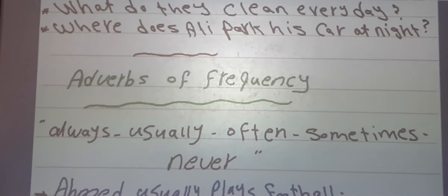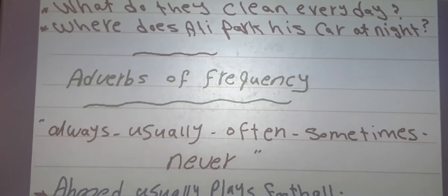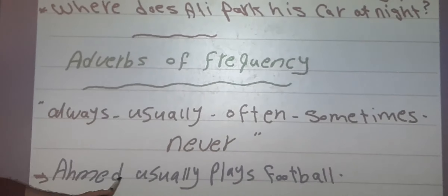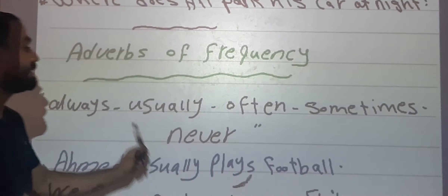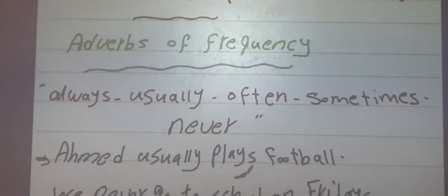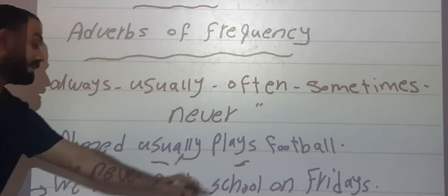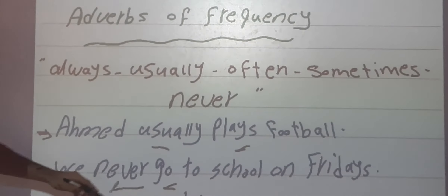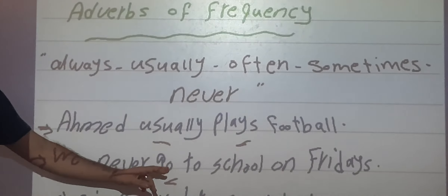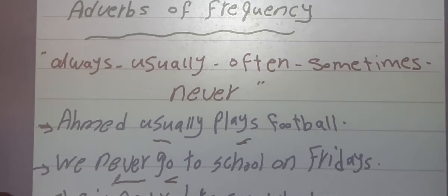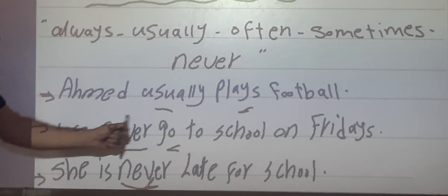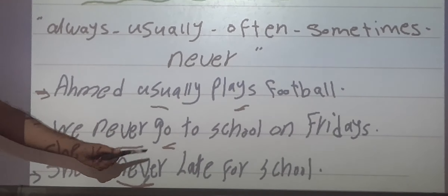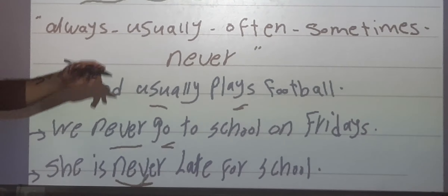Let's talk about adverbs of frequency: usually, always, often, sometimes, never. For example: Ali usually plays — the adverb of frequency comes before the main verb. We never go to school on Fridays — same rule, before the main verb. But after the verb to be: she's never late — the adverb comes after the verb to be.